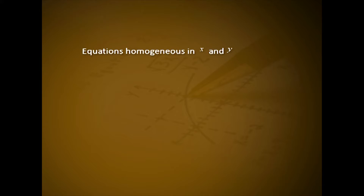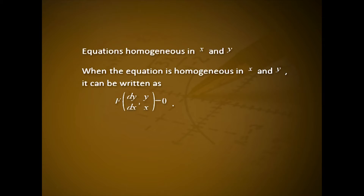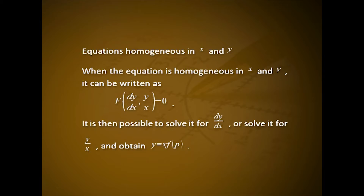For equations homogeneous in x and y: when the equation is homogeneous in x and y, it can be written as f(dy/dx, y/x) = 0. It is then possible to solve for dy/dx or y/x and obtain y = x·f(p). Differentiating with respect to x: p = f(p) + x·f'(p)·(dp/dx), from which dx/x = f'(p)·dp / (p - f(p)), which is in variable-separable form and can be solved.